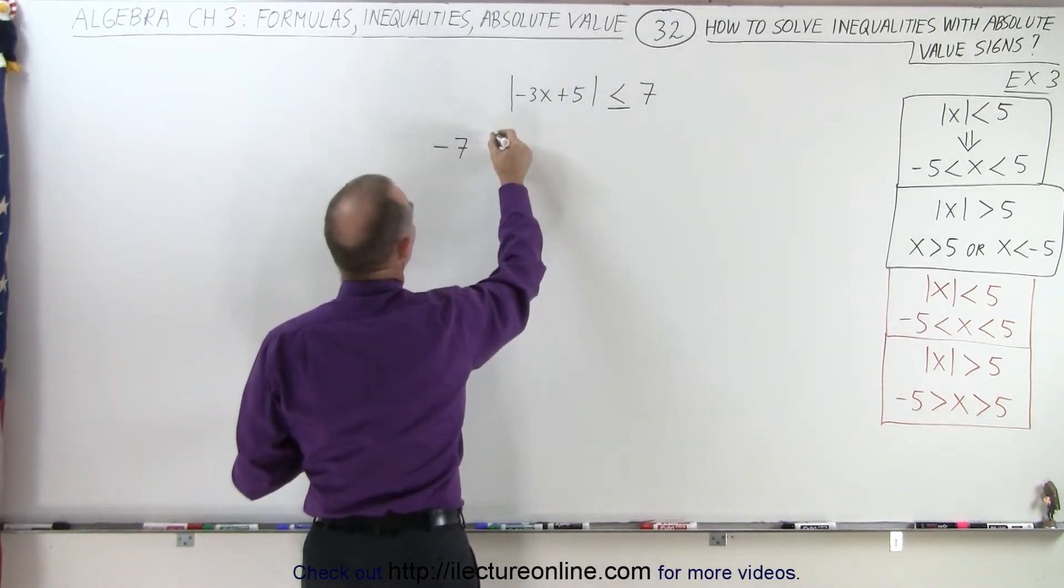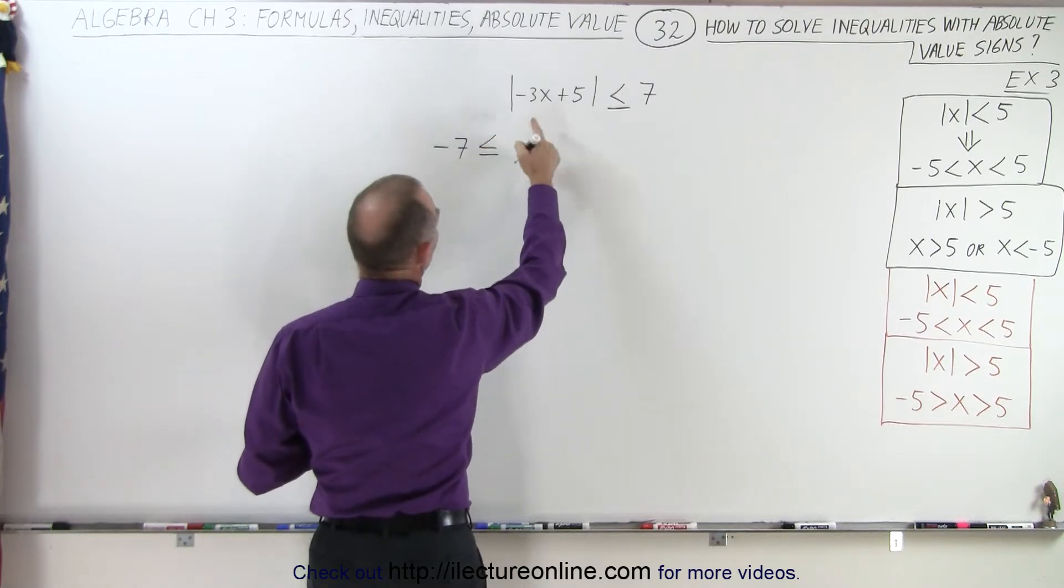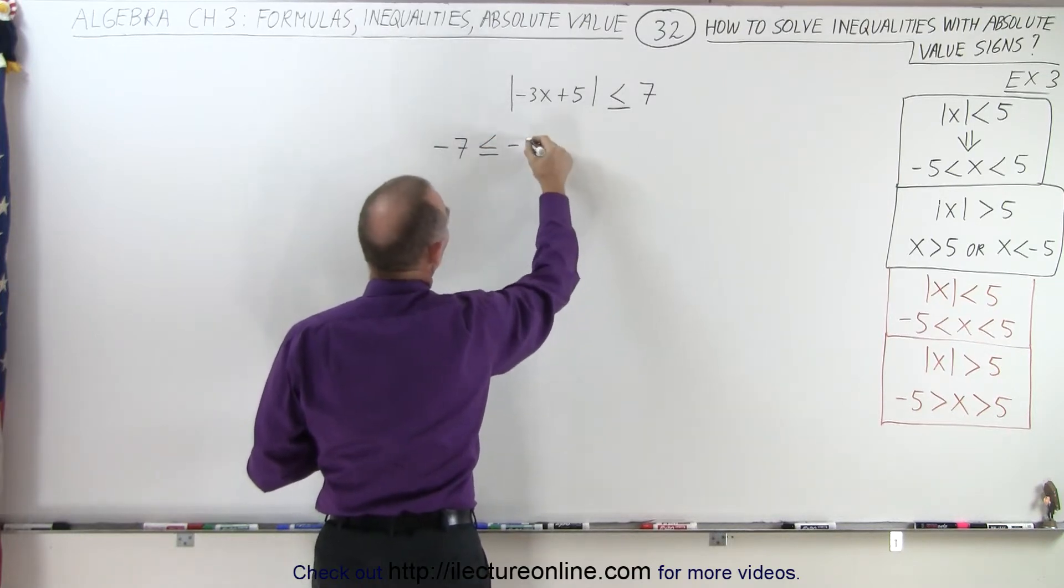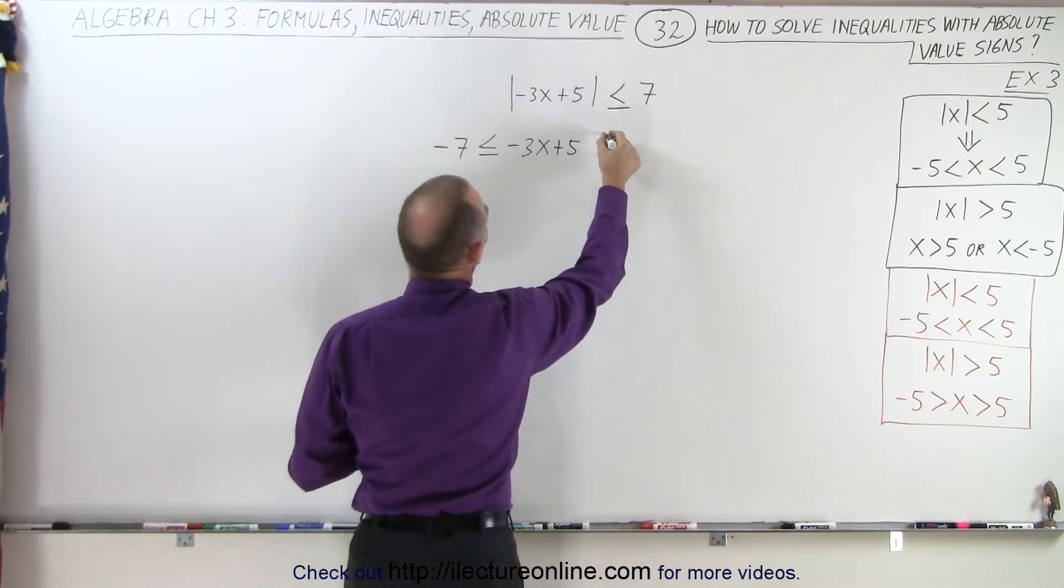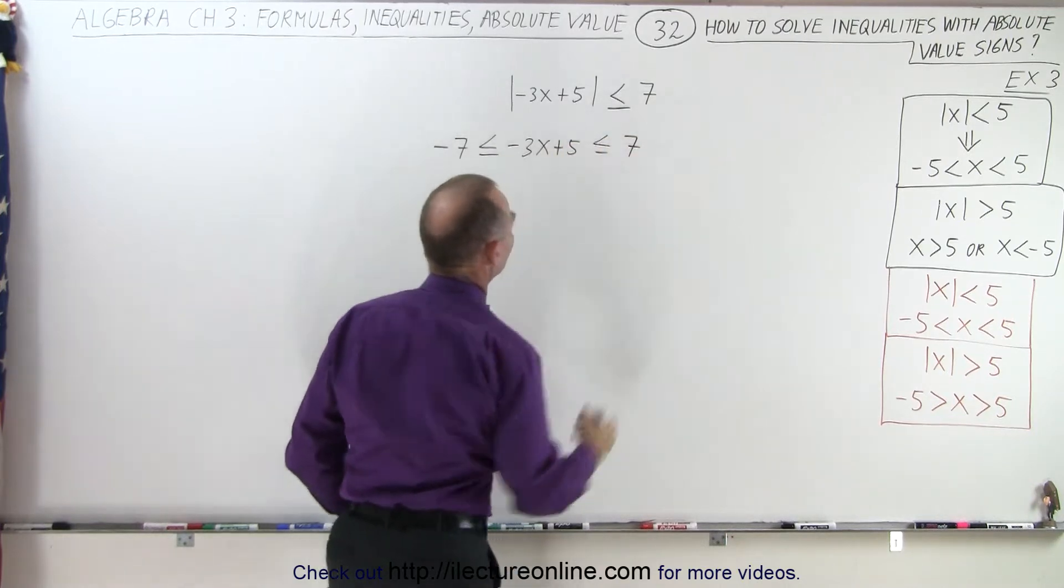Negative 7 will be less than or equal to the quantity inside the absolute value signs, minus 3x plus 5, which is less than or equal to positive 7.